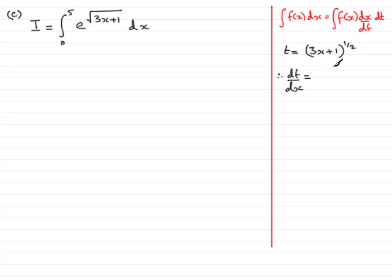Using the chain rule, this becomes one half of 3x plus 1, and we drop the power by 1, so that's minus a half, and then multiply it by the differential of the 3x plus 1, and that becomes 3.